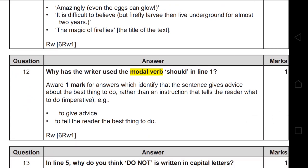Question 12 asks about modal verbs. Modal verbs include must, should, have to, can, could, may, and might. They are used to show reasons: 'must' for orders, 'should' for advice, 'can' and 'could' for ability, 'may' and 'might' for probability. Here 'should' is used for advice. Go back to the text and think about the reason the sentence was written. The answer must identify that the sentence gives advice about the best thing to do — do not simply write 'to tell the reader what they should do' as that repeats the question.